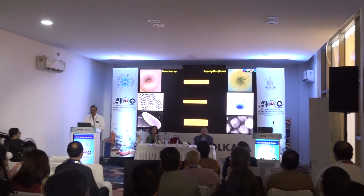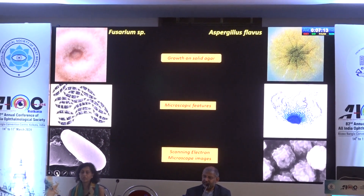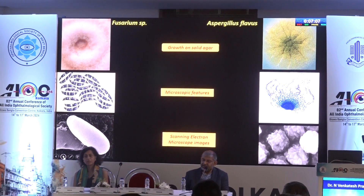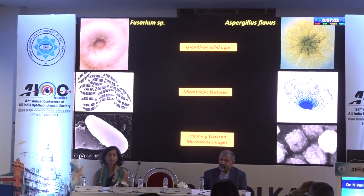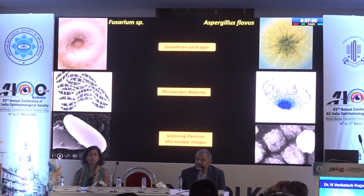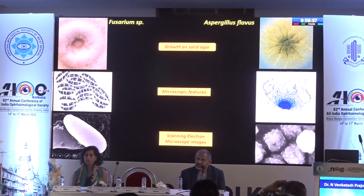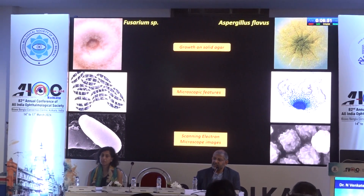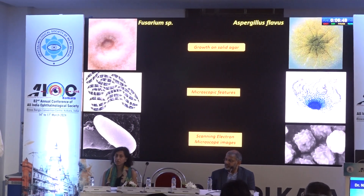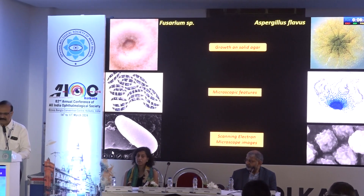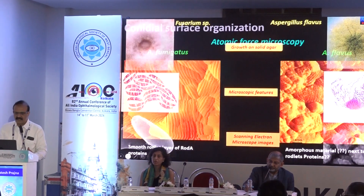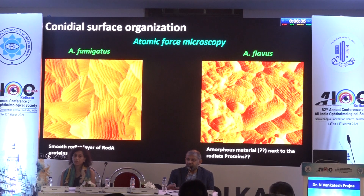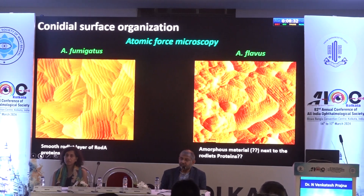This is Fusarium on the left and Aspergillus on the right. At this point of time we tend to treat both in the same manner. The growth, the microscopic features, and the scanning electron microscopic images are completely different. They may look similar in certain identification factors, but when you allow them to grow as they would in the cornea, they have a unique, distinct mechanism of how they cause disease.